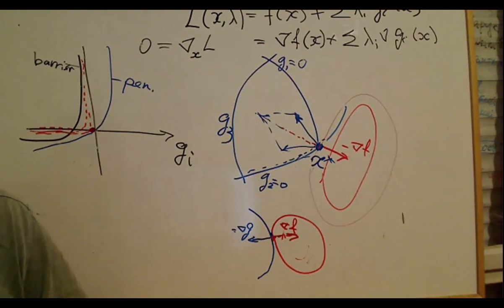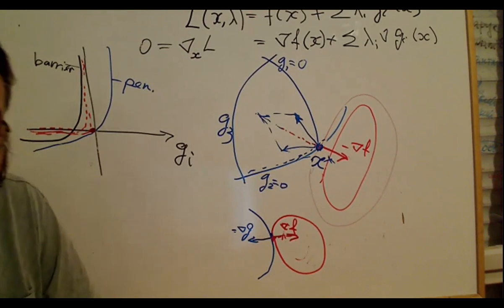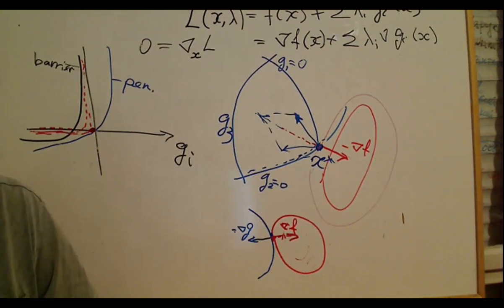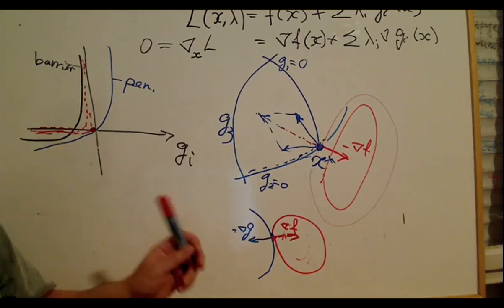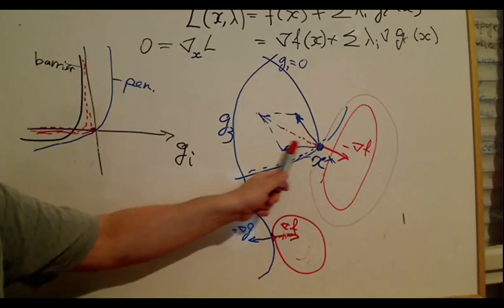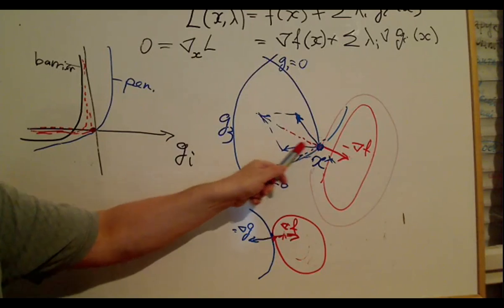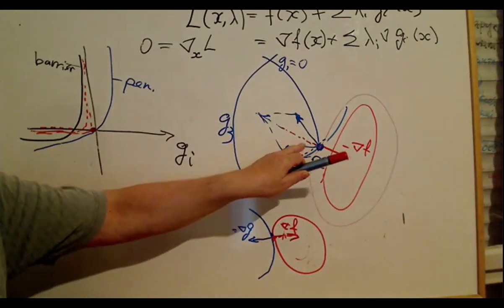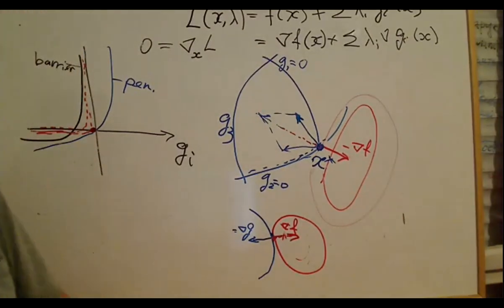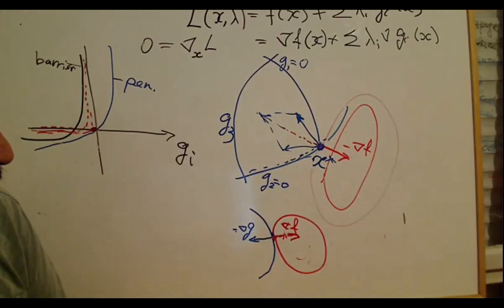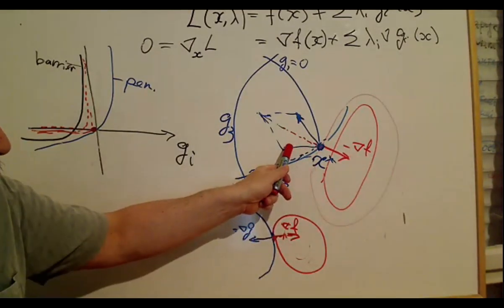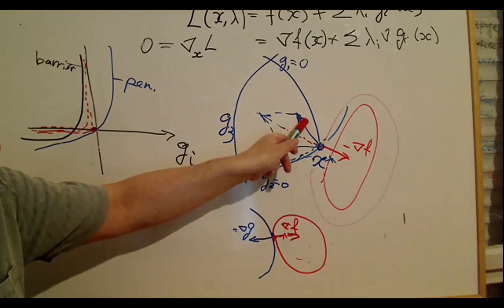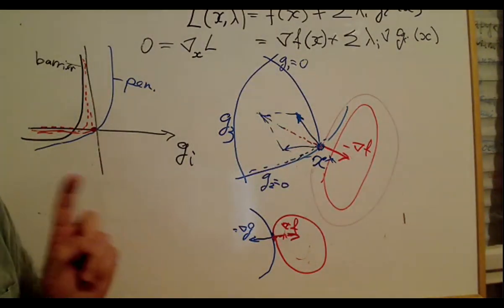Regarding the KKT theorem: we require that the gradients of the active constraints be linearly independent. But from the picture, are they linearly independent? Yes — the gradients of the active constraints are linearly independent, even if they are not orthogonal. In a two-dimensional plane, two vectors in general position are linearly independent. Three vectors in a plane would be linearly dependent, but two vectors pointing in different directions are linearly independent.